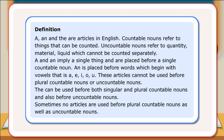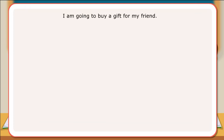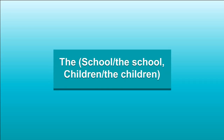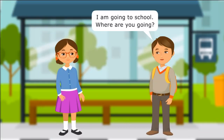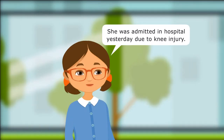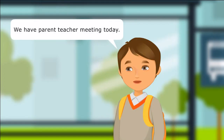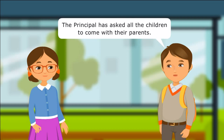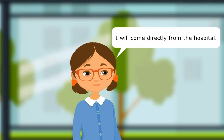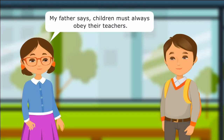Let us look at a few sentences. I am going to buy a gift for my friend. I am going to school. Where are you going? I am going to the hospital to visit my aunt. She was admitted in hospital yesterday due to knee injury. We have parent-teacher meeting today. The principal has asked all the children to come with their parents. Yes, I know. My father will reach the school at 11 a.m. I will come directly from the hospital. My father says children must always obey their teachers.